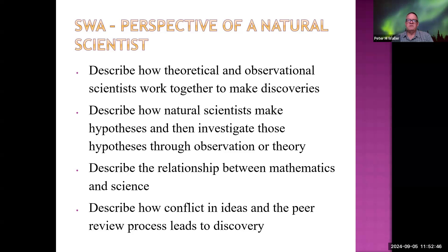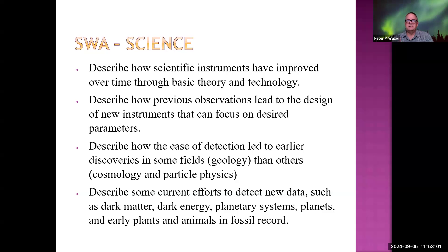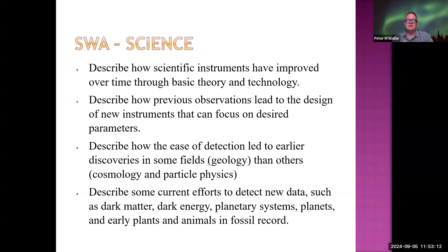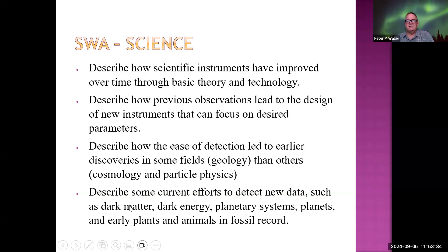Or you might want to focus on the science and technology itself — how do the telescopes work? How were they improved over time? How did observations or the desire for new observations lead to new telescope designs? Right now they're trying to discover gravity waves and thinking about how to design an experiment to observe them. Another topic might be the ease of detection — in geology there are rocks on Earth, which was much easier than in cosmology where they had to build telescopes to look out into space. Also, some new efforts to detect new data, like trying to directly detect dark matter or dark energy, or seeing new planetary systems, or detecting changes in the fossil record.